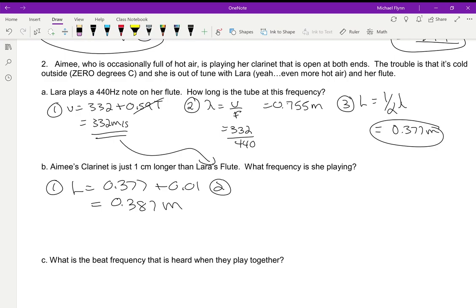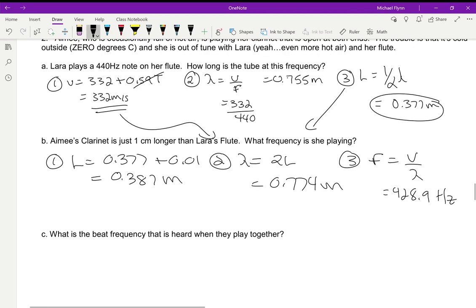Step two is to find the wavelength. The wavelength equals 2L, so it's this step again, except now we're solving for wavelength. So I'm going to take that number and times it by two, and I get 0.774 meters. Okay, that's the wavelength of her waves. And then step three, now we can do f equals v over lambda. So I'll just do 332 times, and I get 428.9 Hz.